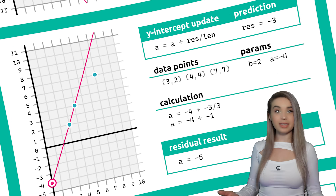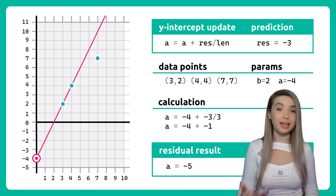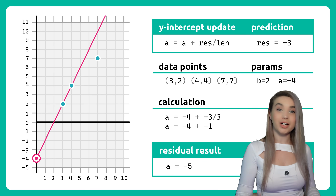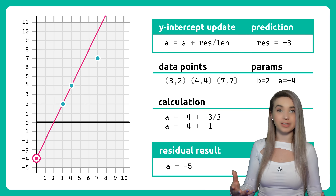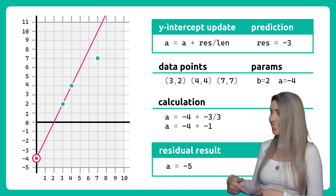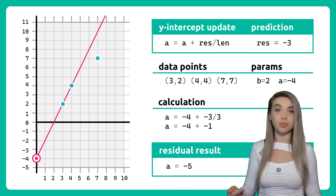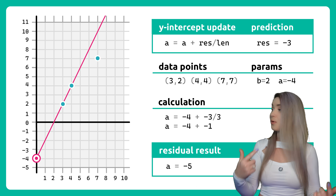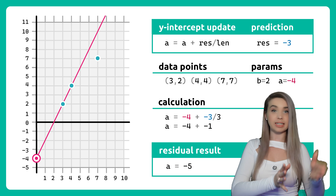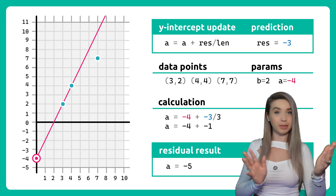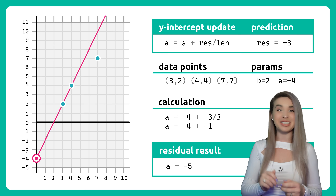Then finally, we skew our line by updating the y-intercept. We simply add to our existing y-intercept the residual divided by the total number of data points — in our case, minus 4 plus minus 3 divided by 3, which gives us the new a of minus 5.